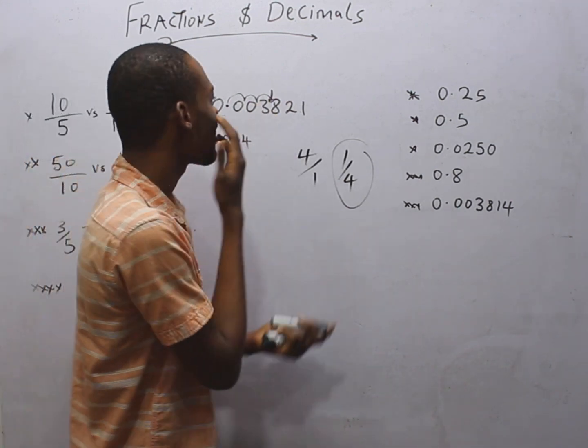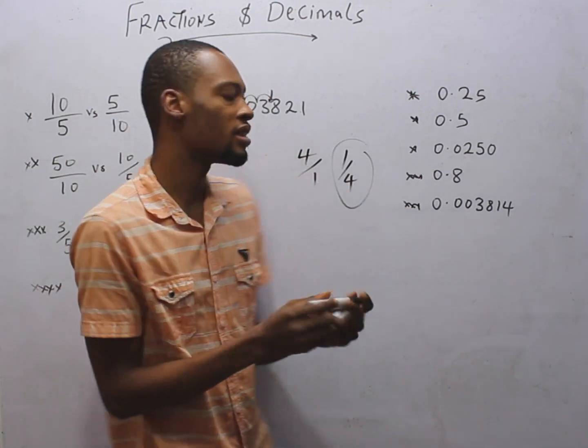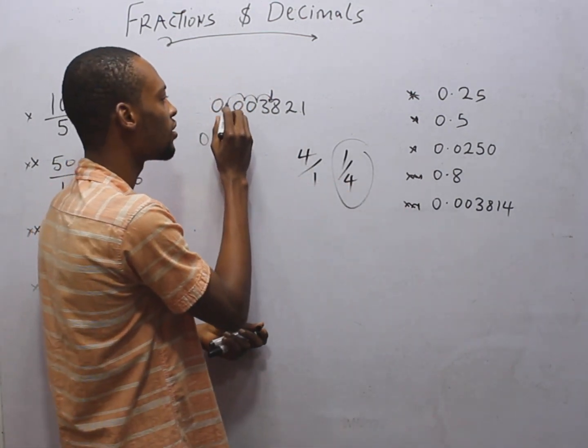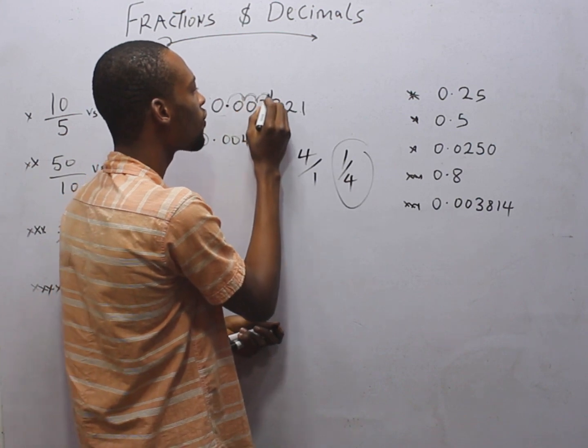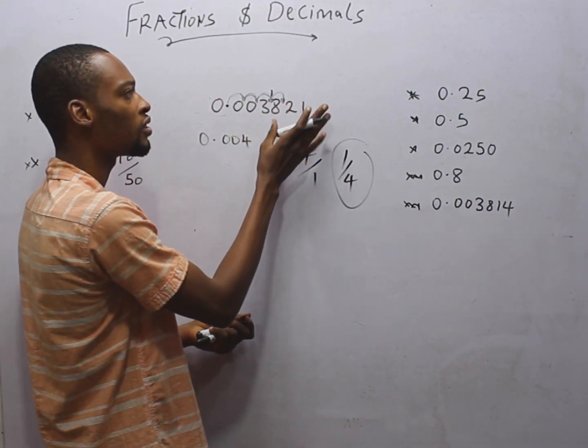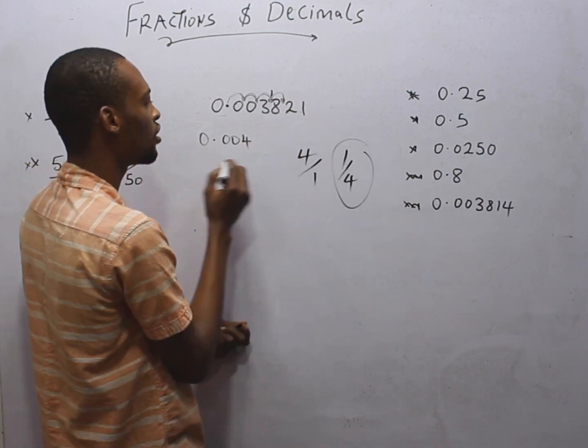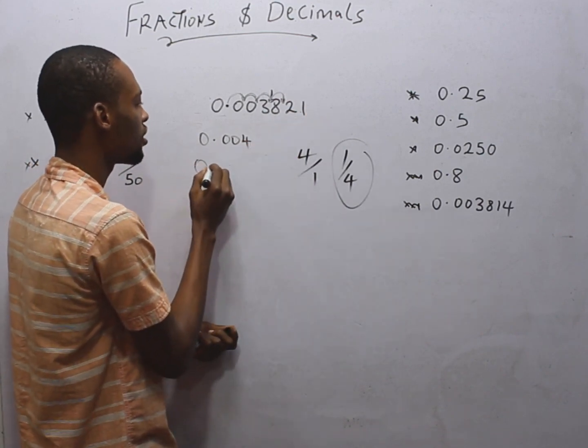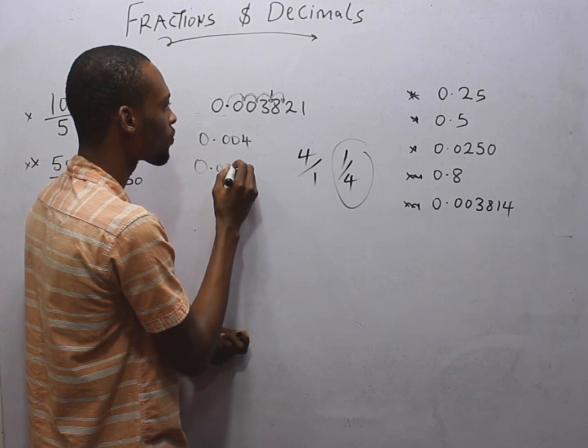If I say round off to 4 decimal places, you start counting from here. 1, 2, 3, 4. This is not more than 4. It's never up to 5. So it doesn't matter. We simply say this is 0.0038.